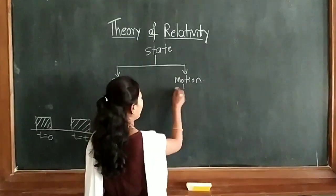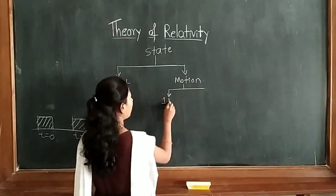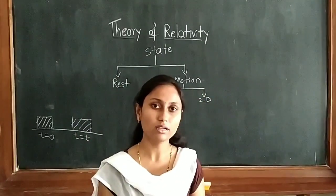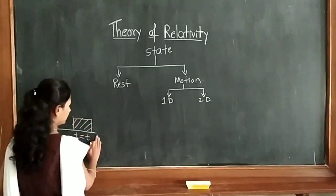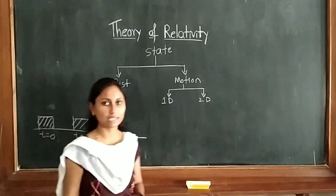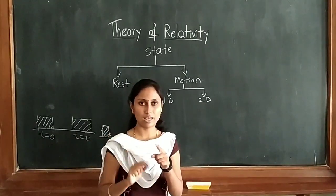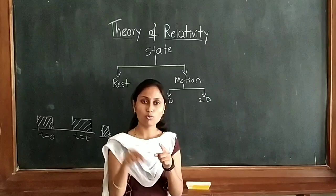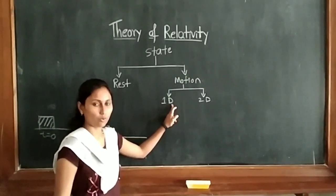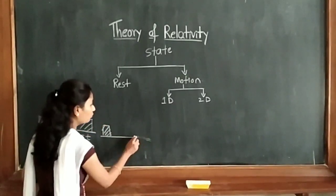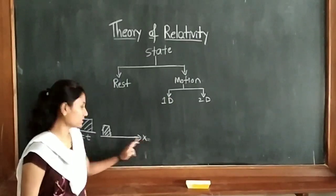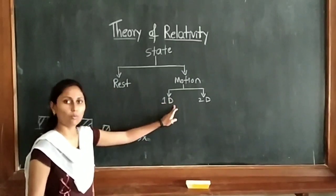Again, in motion we have two parts: one is one-dimensional motion and the second one is two-dimensional motion. One-dimensional means if any body is moving along only one axis. We know three axes are there — X axis, Y axis, and Z axis. If any body is moving along any one of these axes, such a motion is called one-dimensional motion.